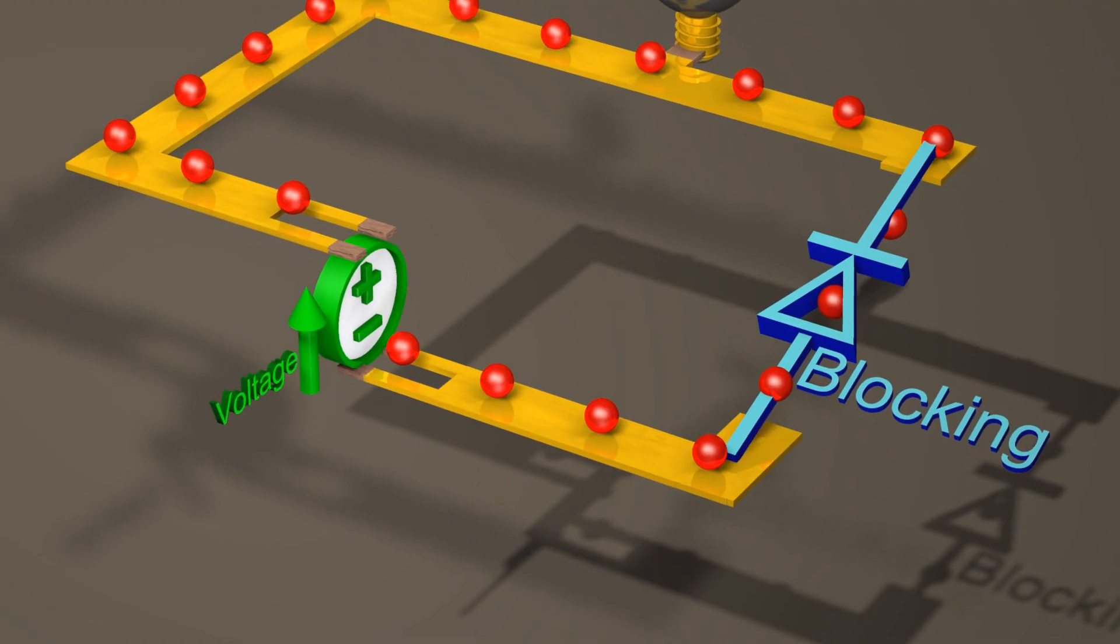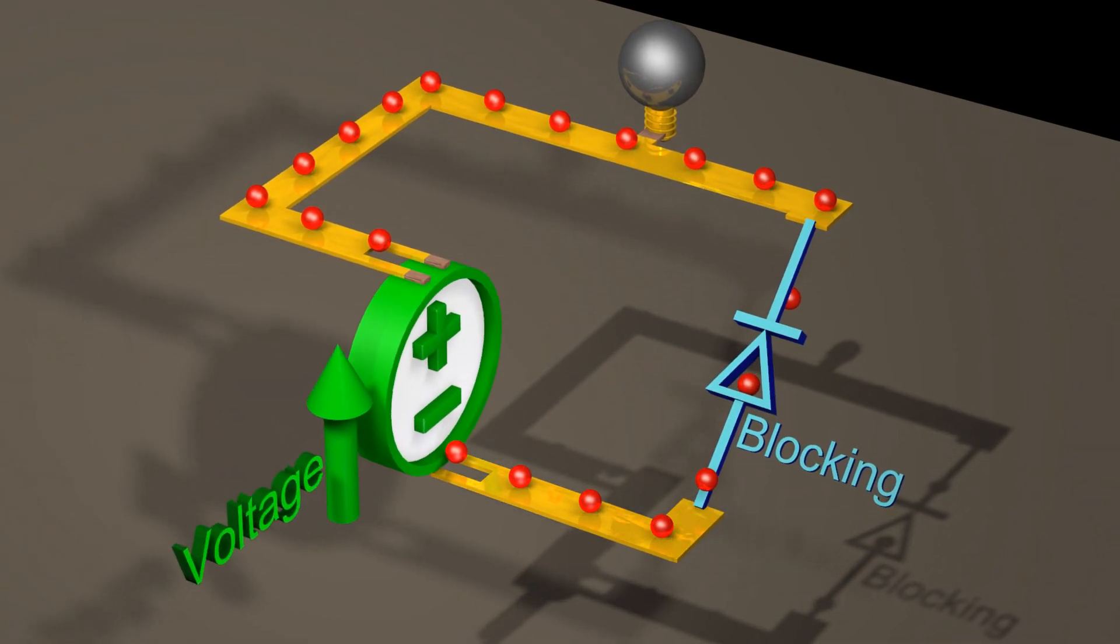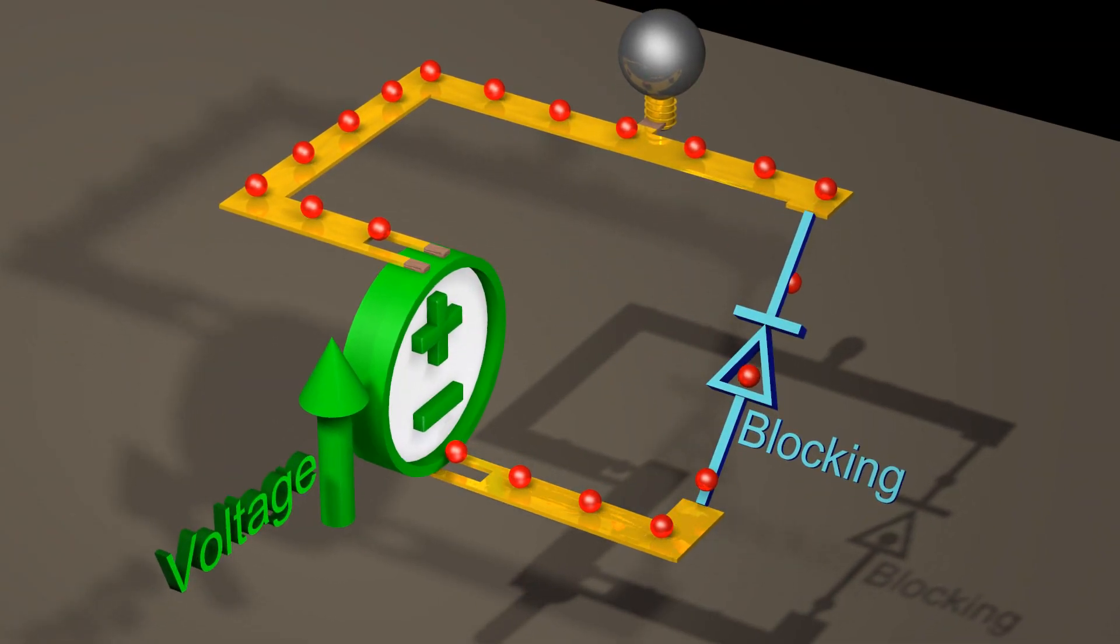When a diode blocks current in the reverse direction, the diode can have a large voltage drop across it.